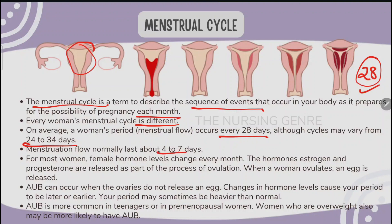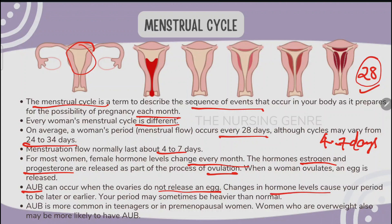Normal menstruation flow lasts about 4 to 7 days. For most women, female hormone levels change every month. The hormones estrogen and progesterone are released as part of the process of ovulation — ovulation meaning the release of an egg from the ovarian follicle. AUB can occur when the ovaries do not release an egg. Changes in hormone levels can cause your period to be late or earlier than usual.